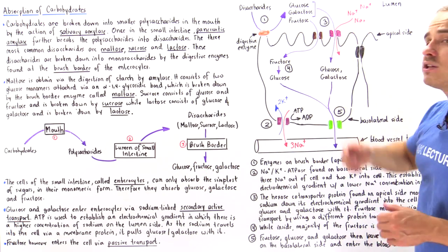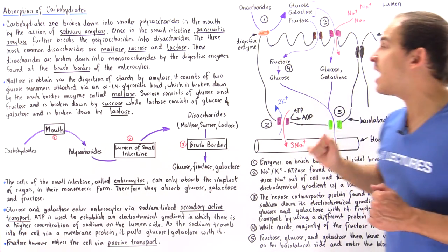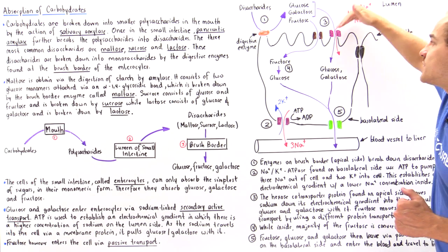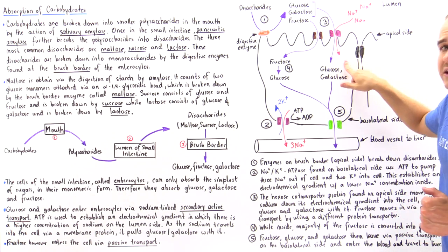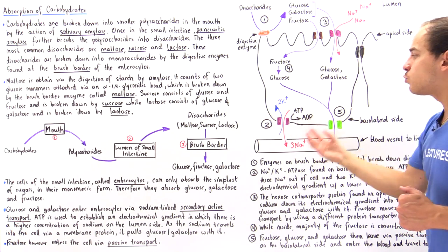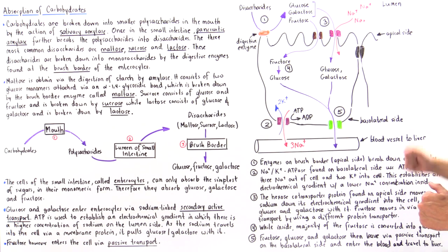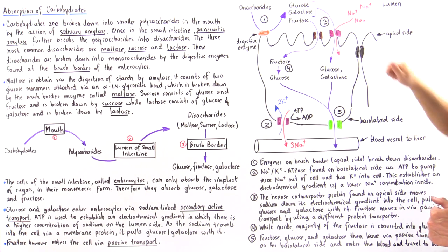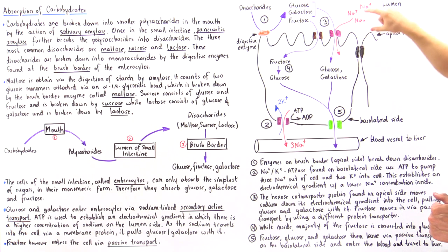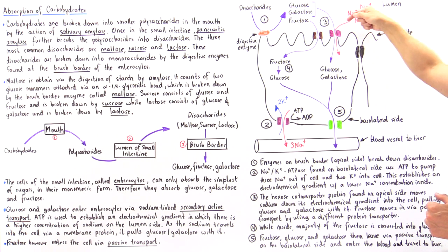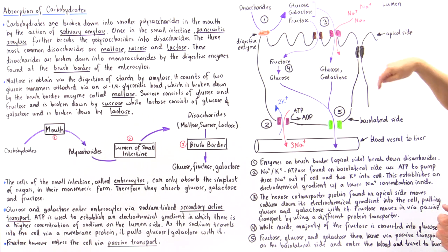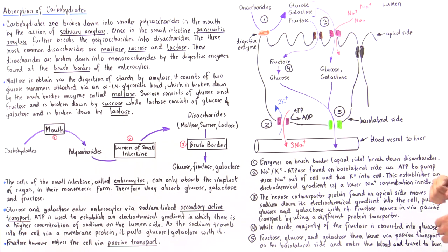The reason it's called a co-transporter is because as sodium moves down its electrochemical gradient — established by the ATPase pump — glucose or galactose is brought in with the movement of this sodium. So as the sodium moves in, glucose and galactose also move in via this same co-transporter protein.